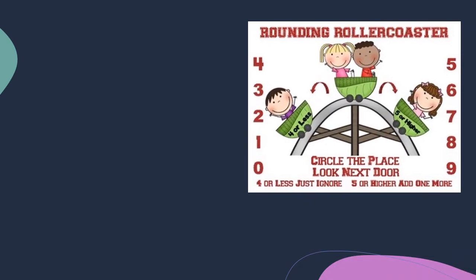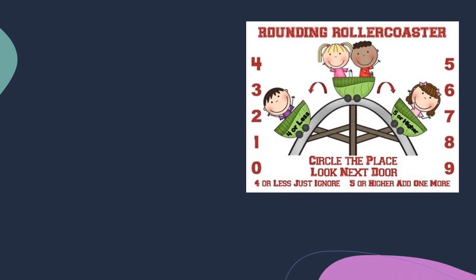Here is the rounding roller coaster. Circle the place, look next door, four or less, just ignore. Circle the place, look next door, five or higher, add one more. And notice on the chart that four, three, two, one, and zero are the digits that are four or less. And five, six, seven, eight, and nine are the digits that are five or higher.